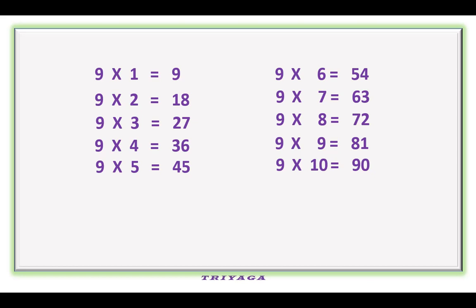Children, let's practice again. 9 1s are 9, 9 2s are 18, 9 3s are 27, 9 4s are 36, 9 5s are 45.